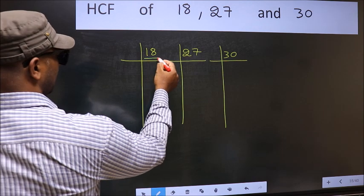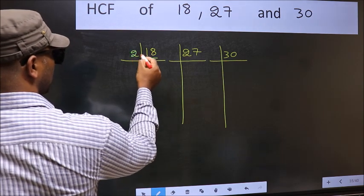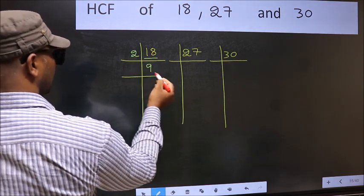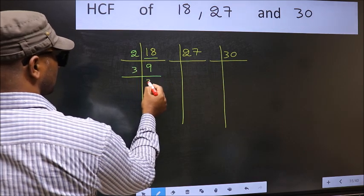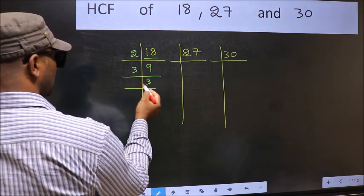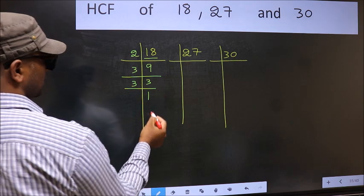Now here we have 18. 18 is 2 times 9. Now 9 is 3 times 3. Now 3 is a prime number, so 3 times 1 equals 3.